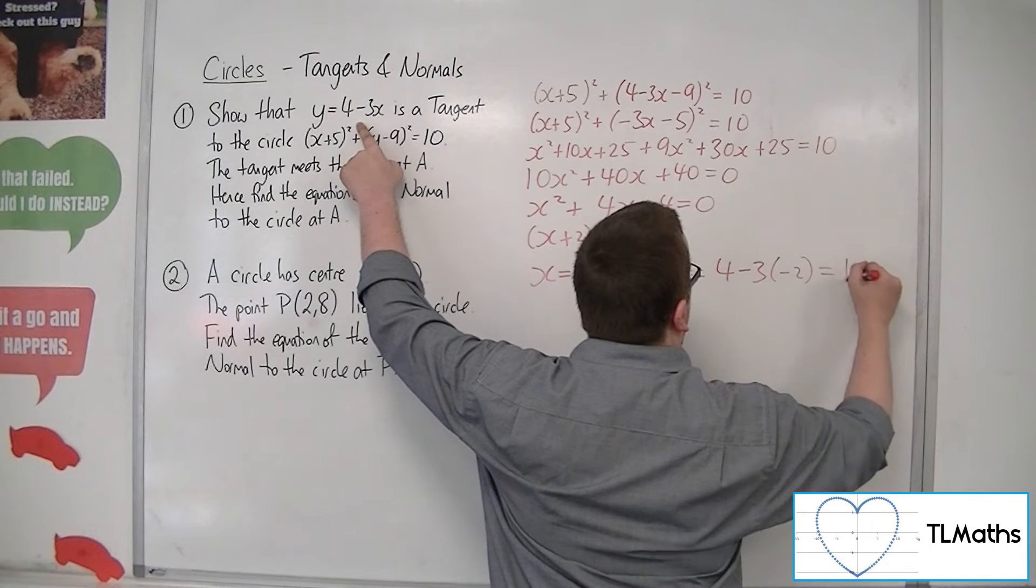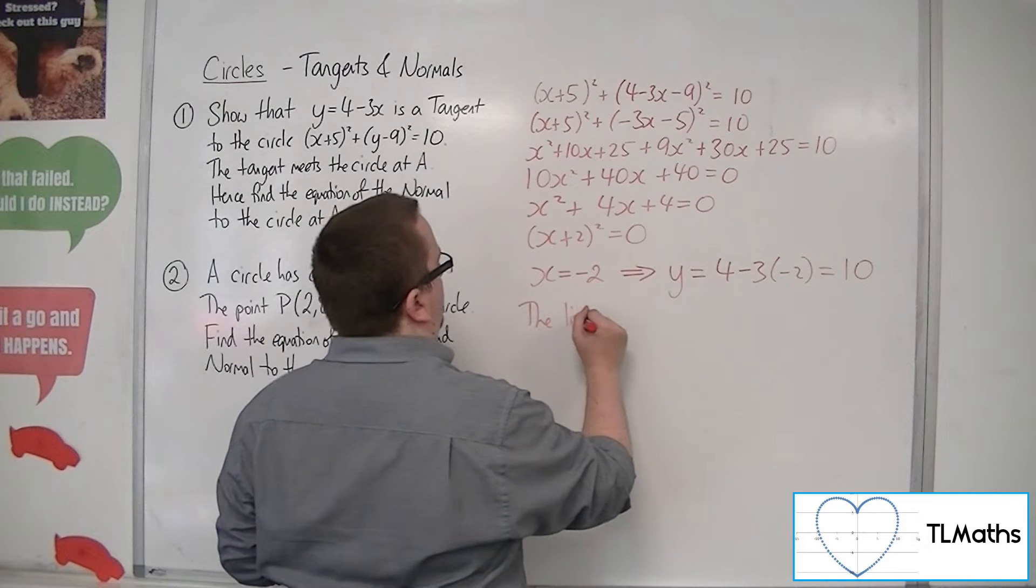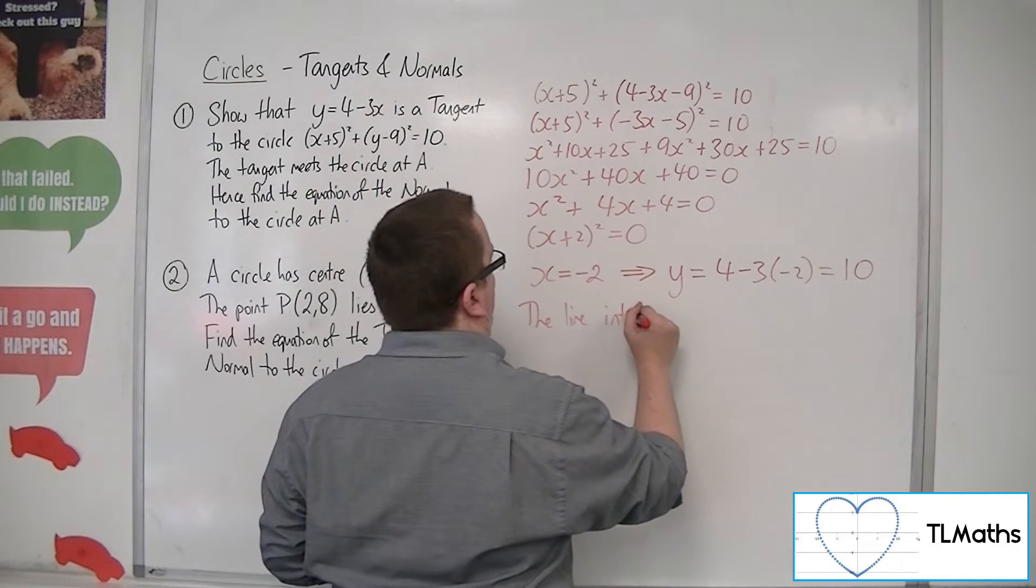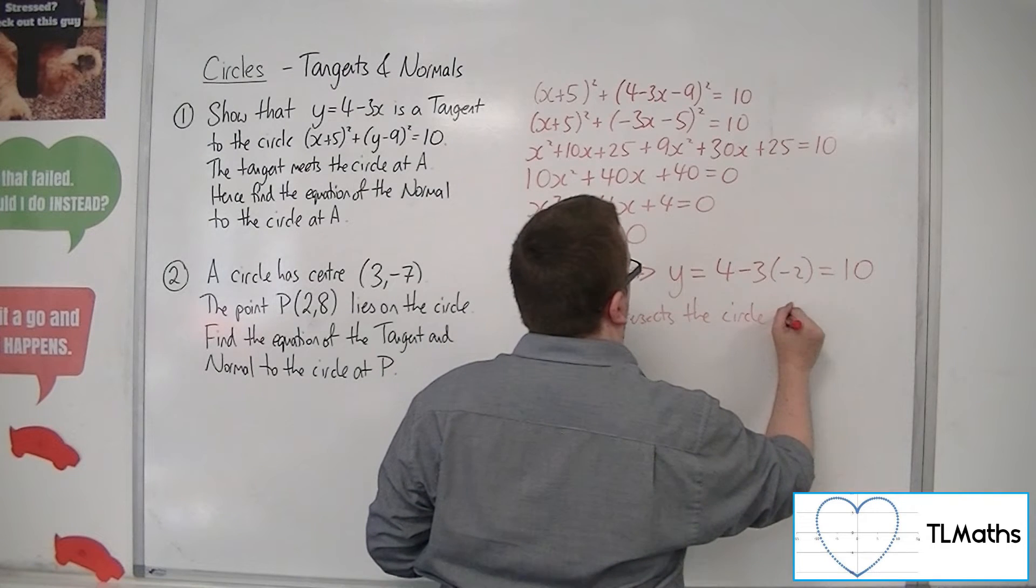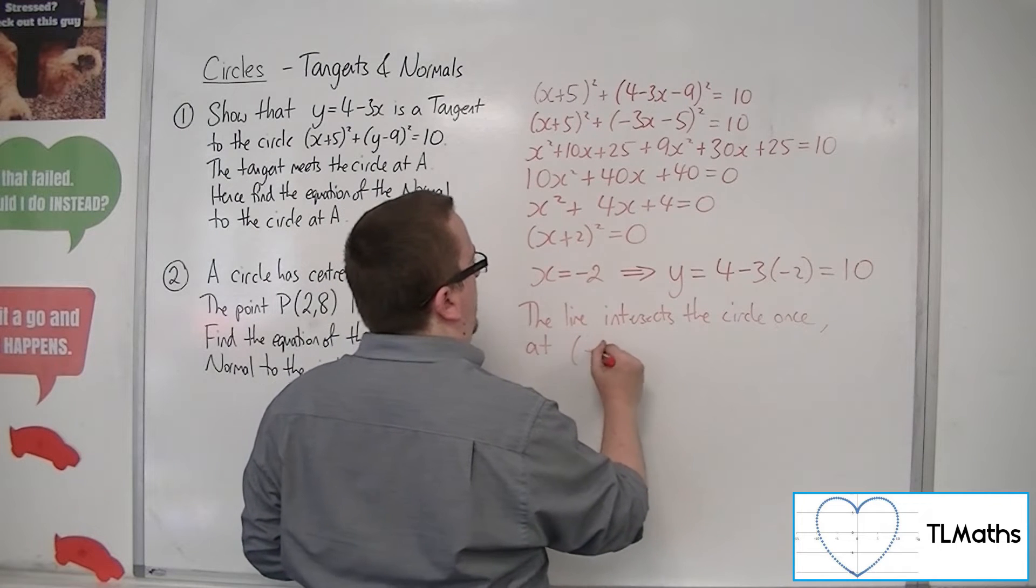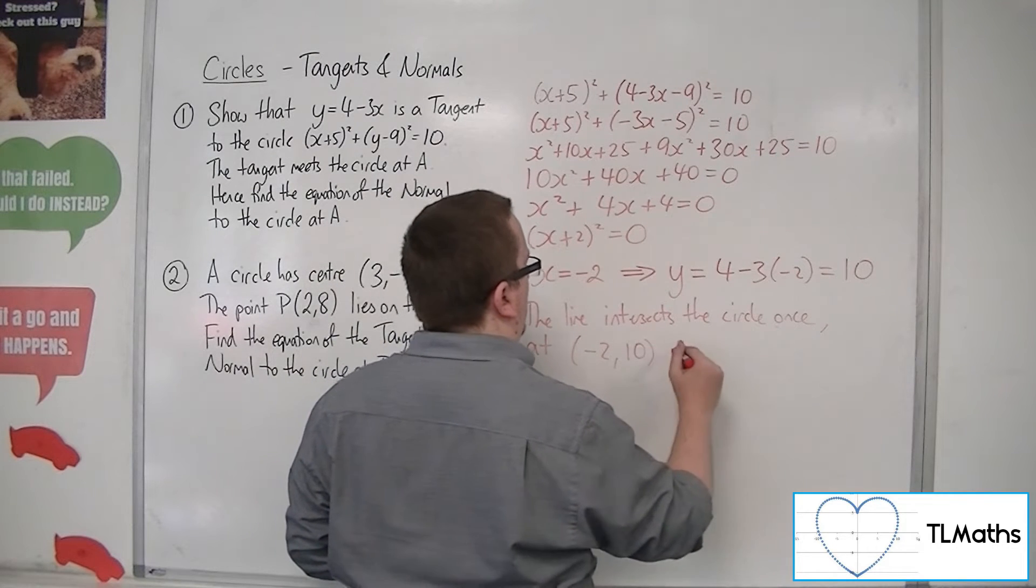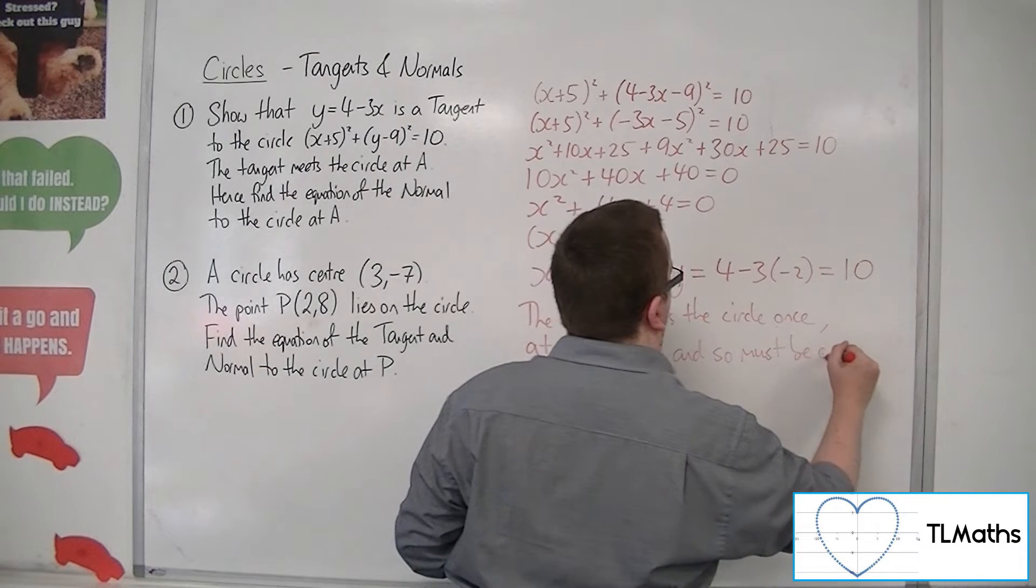4 plus 6 is 10. So the line intersects the circle once at minus 2, 10. And so must be a tangent.